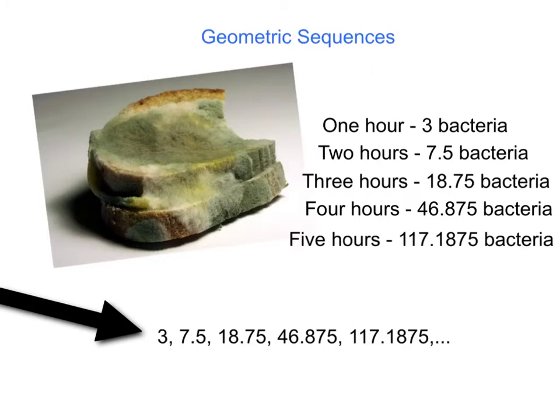Then we have to think about the constant ratio. This is the number you multiply each number by to get the next number. So 3 times what number will give us 7.5? 3 times 2.5 gives us 7.5. 7.5 times 2.5 gives us 18.75, and so on. So our ratio is 2.5.